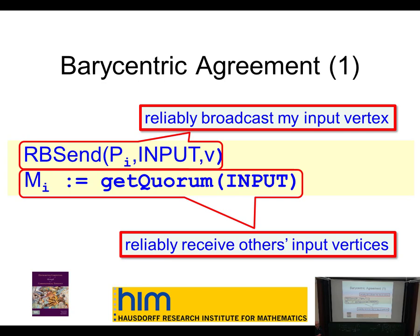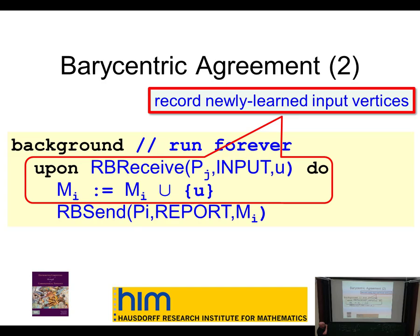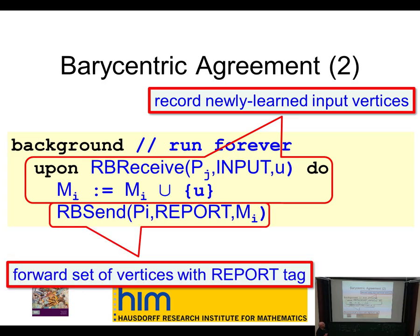In the background, every time I learn a new input vertex I record it locally and forward it to everyone with a tag saying 'I heard about this vertex, if you haven't heard about it please add it to your set.' There's a lot of forwarding going on — we need the good processes to send enough messages to overwhelm the bad guys. This is why the background forwarding can't ever quit: you can't detect termination. This is the heart of the protocol: as long as I don't have enough buddies — enough other processes that agree with me — I accumulate all new reports.